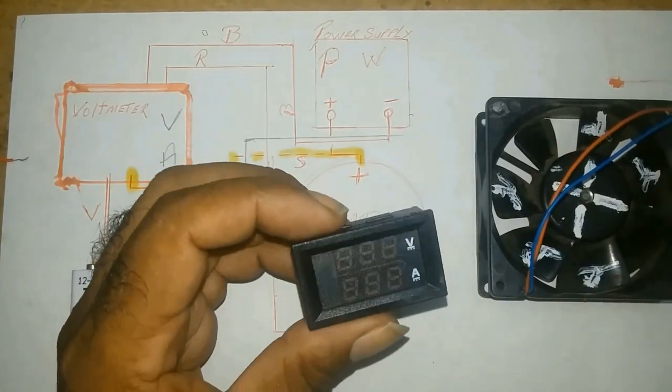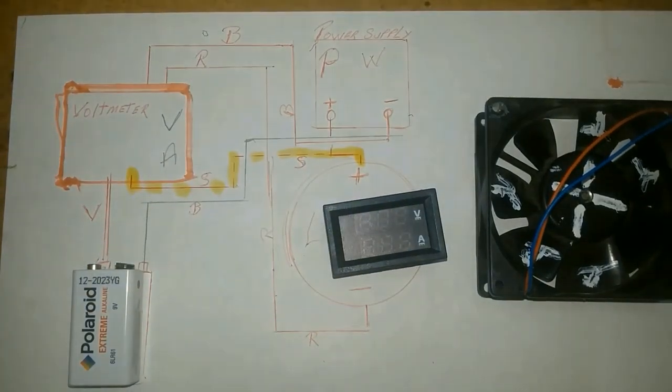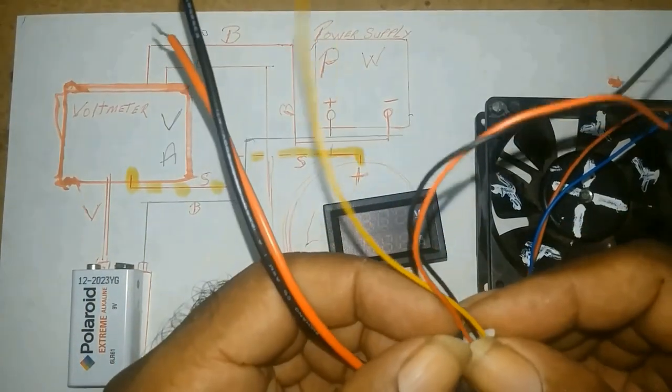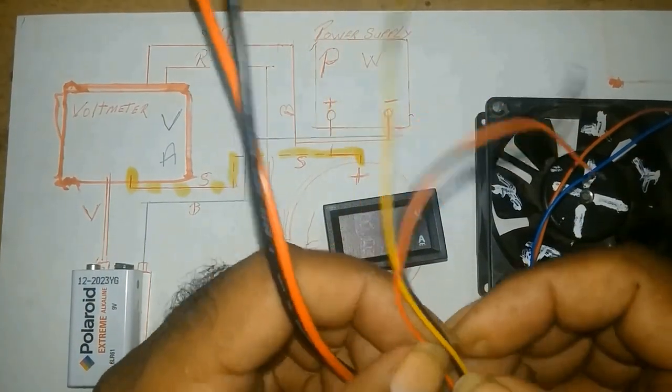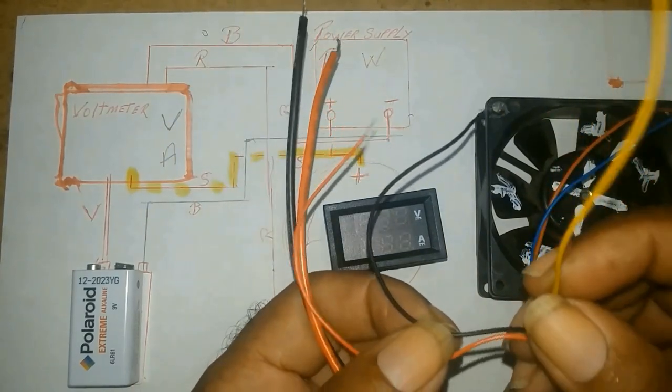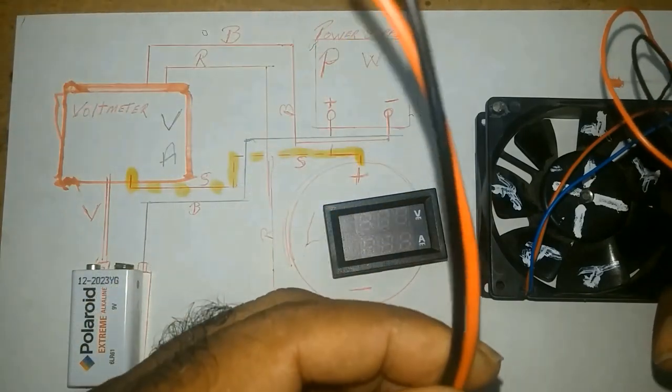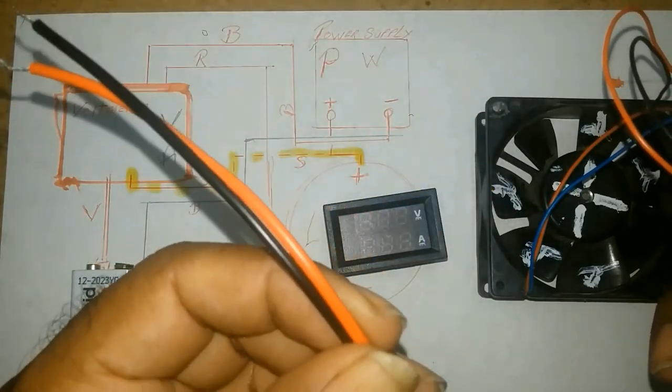This dual volt meter is a five wire meter. These wires are positive, negative, the measuring wire, and the amperage measuring wire.